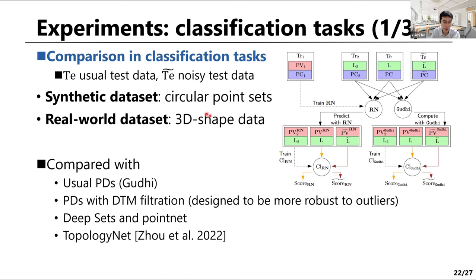We evaluated LipsNet in classification tasks using clean test data TE and noisy test data TE-tilde. For the synthetic dataset, we generated circular point sets and considered the task of predicting the shape class. We trained LipsNet with the usual persistent diagram vectorization, and then trained a classifier with the LipsNet output. We compared LipsNet with four methods: usual persistent diagrams computed by an open source software (Gudhi), persistent diagrams with DTM filtrations (designed to be more robust to outliers), DeepSets and PointNet architectures, and TopologyNet.